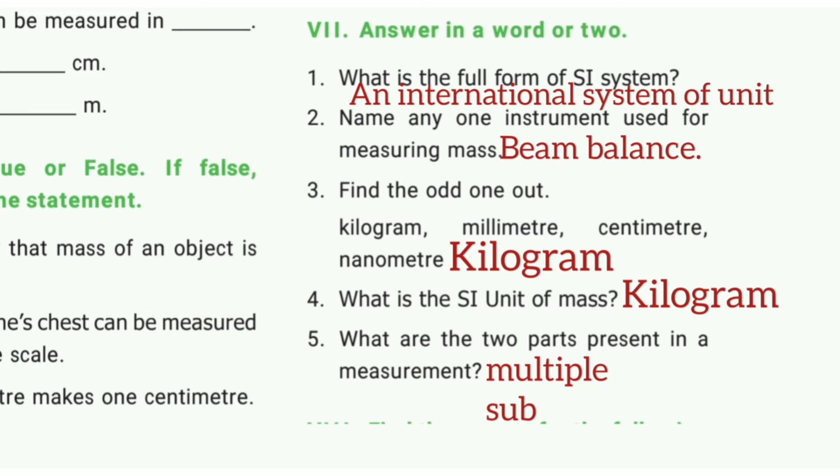Fifth one: What are the two parts present in a measurement? The answer is magnitude and unit.